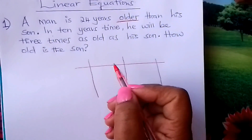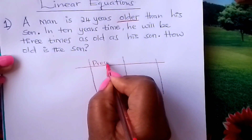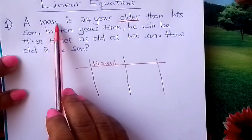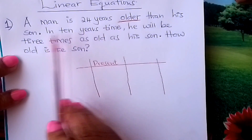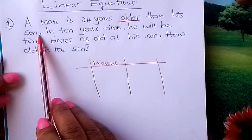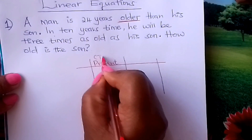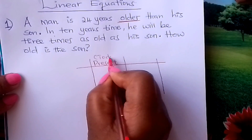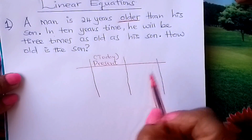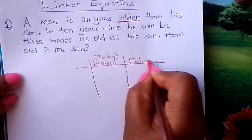Here, you write about the present age. The first sentence — a man is 24 years older than his son — is in the present state. So you talk about present, or today — their age today. And then the second sentence is to do with the future.